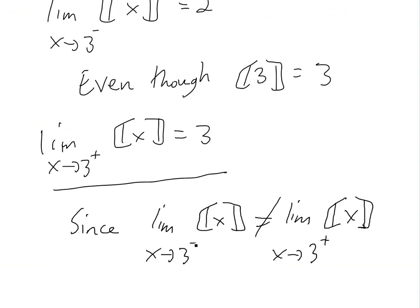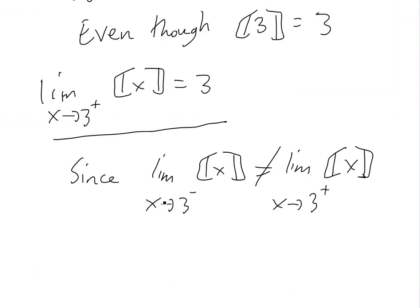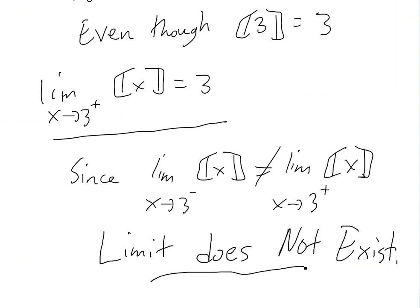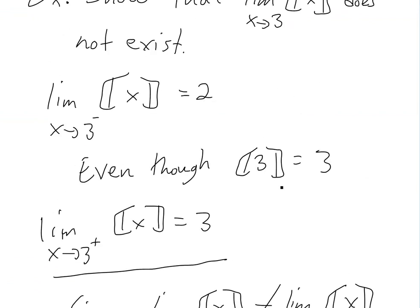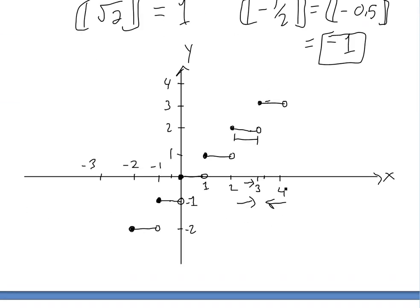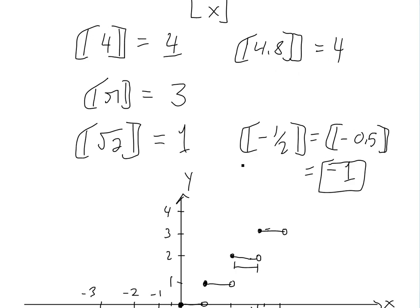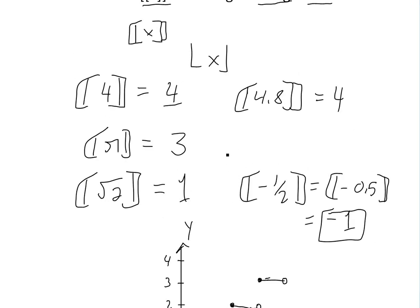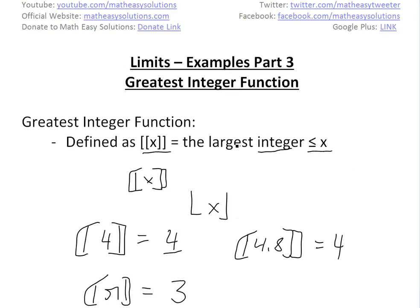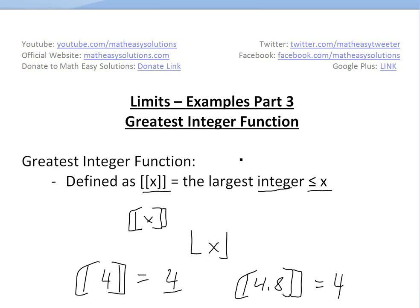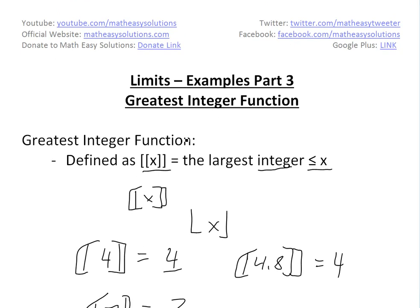So since the limits from either side does not get the same answer, that doesn't equal each other, then the limit does not exist. That's our answer right here. Well, that's all for today. I hope you learned from this example on the greatest integer function. This is pretty interesting. First time that I've ever heard of it. It was in my calculus book that I might as well share it. Well, that's all for today. You can download these notes in the Dropbox link below. And stay tuned for another Math Easy solution.